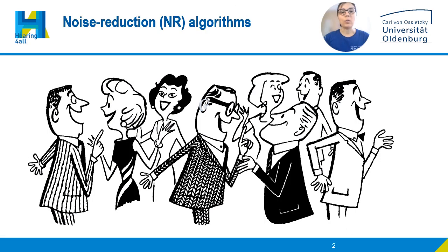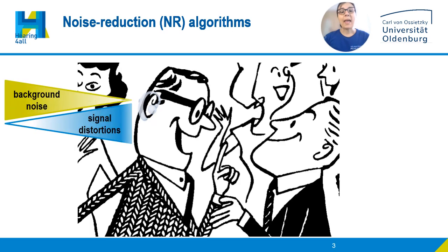Noisy rooms are among the most difficult environments for hearing aid users, and noise reduction algorithms are an essential part of the hearing aid, as they aim at improving listening comfort by reducing the annoyance of surrounding noise. However, increasing listening comfort comes at the expense of speech naturalness, as noise reduction processing artifacts introduce a certain amount of distortion into the speech signal.